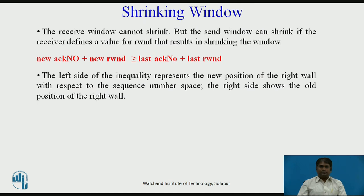The receive window cannot shrink, but the send window can shrink if the receiver defines a value for the receiver window that results in shrinking it. Some implementations do not allow shrinking of the send window — the limitation does not allow the right wall of the send window to move to the left. The rule is: new acknowledgement plus new receiver window must be greater than or equal to last acknowledgement number plus last receiver window. The left side of the inequality represents the new position of the right wall with respect to the sequence number space; the right side shows the old position. This relationship shows that the right wall should not move to the left.